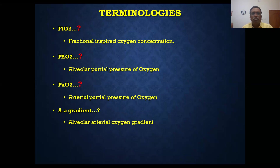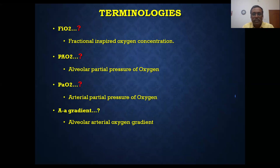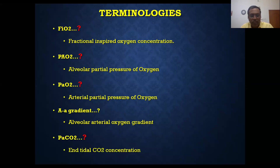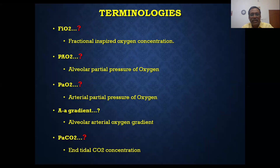The gradient between PAO2 and PaO2 is the most important point: the more the gradient, the more the hypoxemia; the less the gradient, the less the hypoxemia. Next is PaCO2 — small 'a' stands for artery — that is the CO2 tension in the artery, which we can also estimate using end-tidal CO2 concentration.